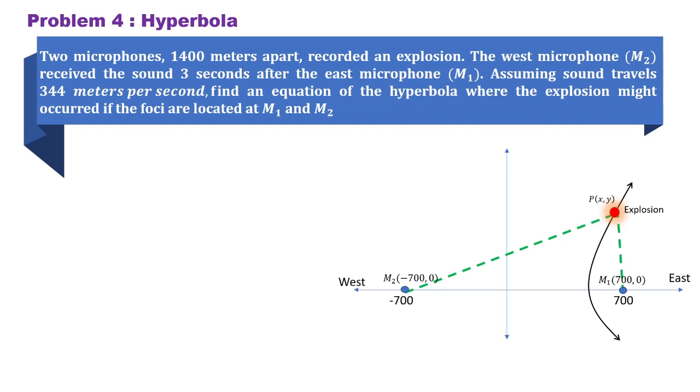Using the idea of speed, which is distance over time, or distance is equal to rate times time, we can multiply the given speed of sound of 344 meters per second by 3 seconds. The unit of time will be cancelled, so 344 times 3 is equal to 1,032 meters. This means that the sound traveled 1,032 meters farther reaching M sub 2 than M sub 1. We can also say that the computed distance would be 2a, having a would be 516, or 1,032 divided by 2.